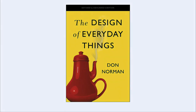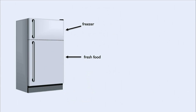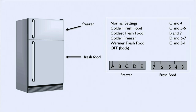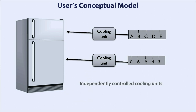For that I shift to Don Norman's book The Design of Everyday Things. There's an anecdote about a refrigerator with two compartments — a freezer and a fresh food compartment — and two dials. Norman was having trouble setting the temperature. The dials suggest a conceptual model: one dial controls the freezer cooling unit, the other controls the refrigerator cooling unit.